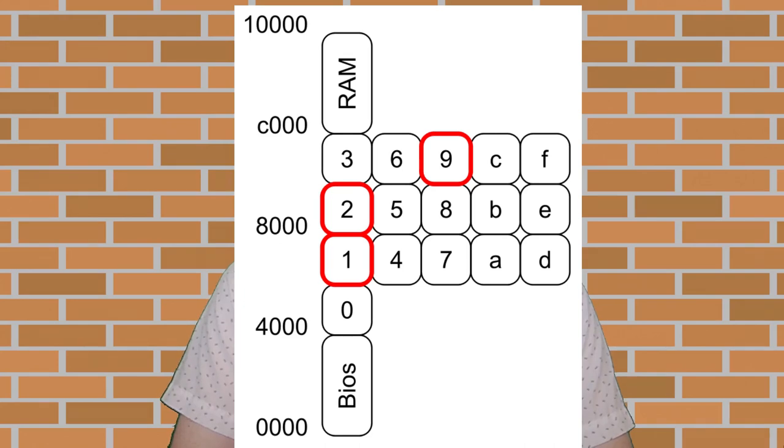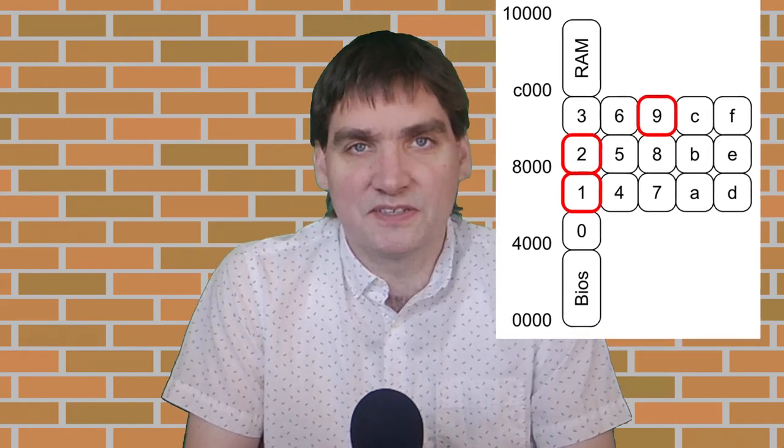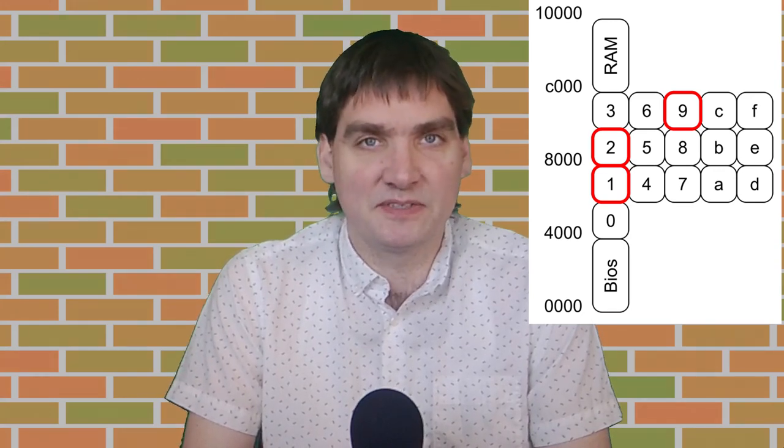Each block consists of three pages that can separately be mapped, but that is irrelevant for this discussion. Page zero obviously contains things that need to always be accessible — the code for switching the pages and some code mostly just for running the game. The other five blocks are interesting: the first two — pages one, two, three and pages four, five, six — seem to contain mostly code, part of running the game.